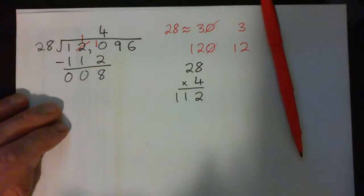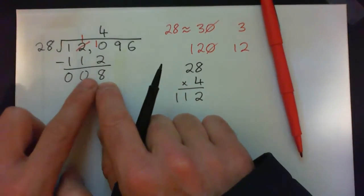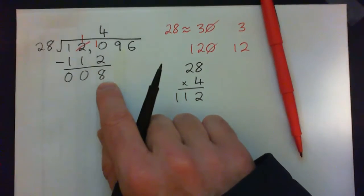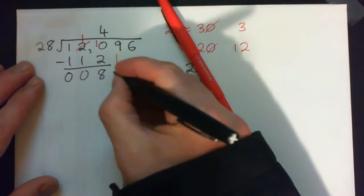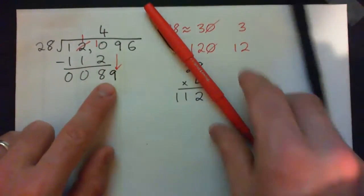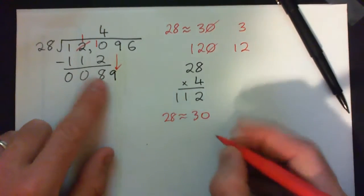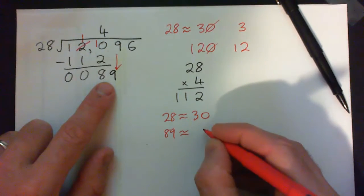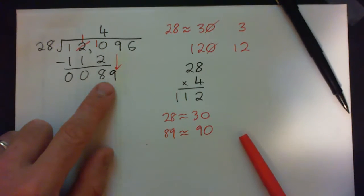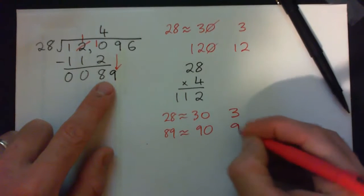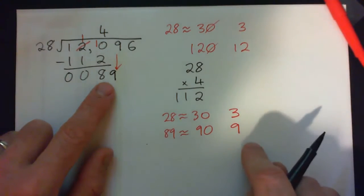28 into 8. This number is smaller than 28, so we did the right thing. The remainder needs to be less than that number. So now we bring this 9 down here. And 28 into 89 goes how many times? Again, 28 is about 30. 89 is about 90. So it's 30 into 90 goes how many times? Or you could think 3 into 9. 3 into 9 goes 3 times.